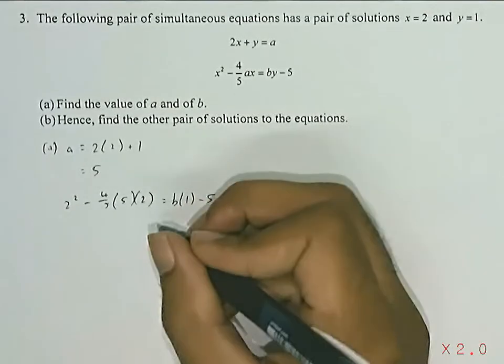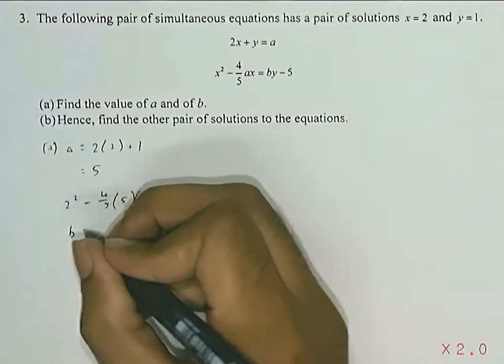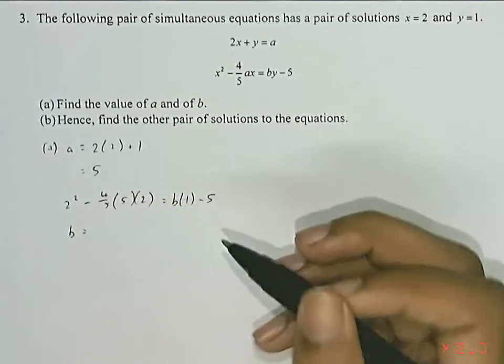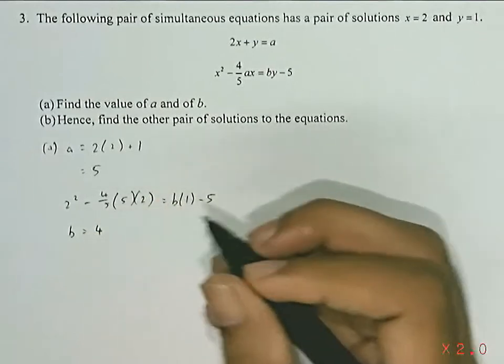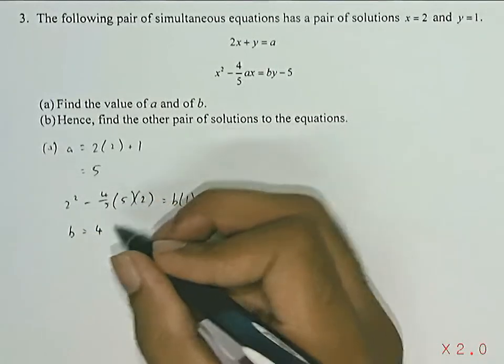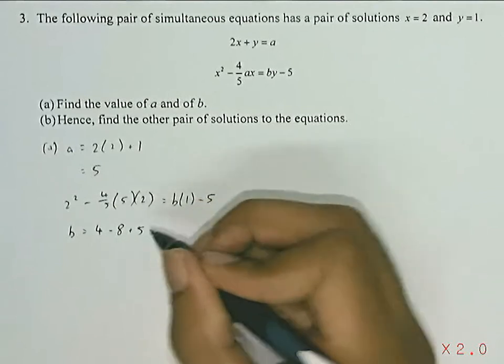So, we are left with b is equal to, bring over the 5, you get 4 minus 8 plus 5.